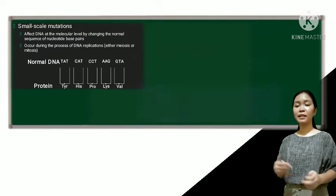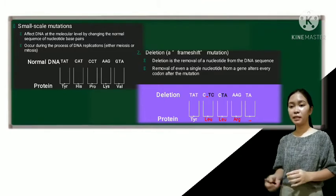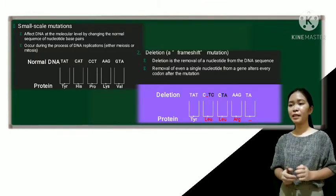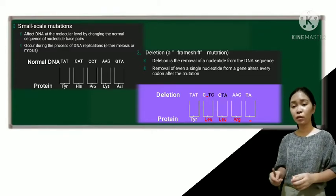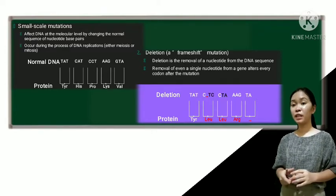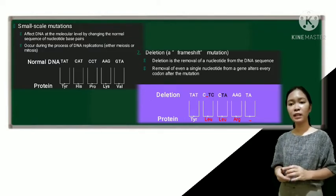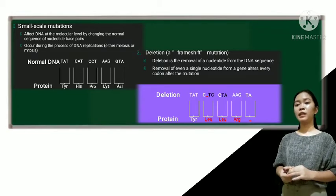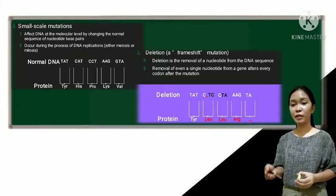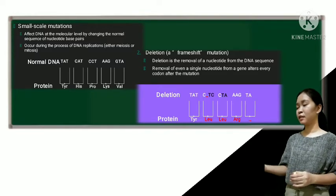Okay, so next is the deletion. So a deletion is a removal of a nucleotide from the DNA sequence. So deletions are referred to as a frameshift or frameshift mutations because the removal of even a single nucleotide from a gene subsequently alters every codon after the mutation. So it is said to be the reading frame is shifted. Okay, so we have here the normal DNA and the deletion.